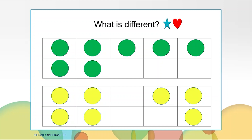What is different in both pictures? It is different because the top 10 frame has green counters and the bottom 10 frame has yellow counters. It is different because of the way they show seven. The green counters have five on the top row and two in the first two boxes of the bottom row. The yellow counters have four on the top row with the middle box empty, and the bottom row has counters in the first two boxes and the last box. Can you think of anything else that is different?